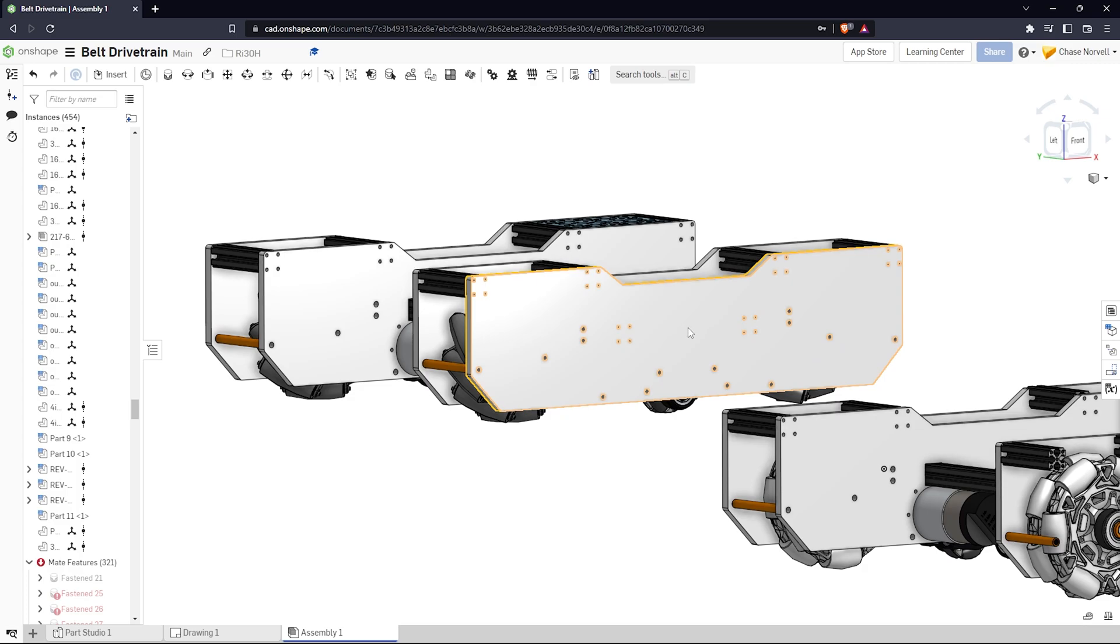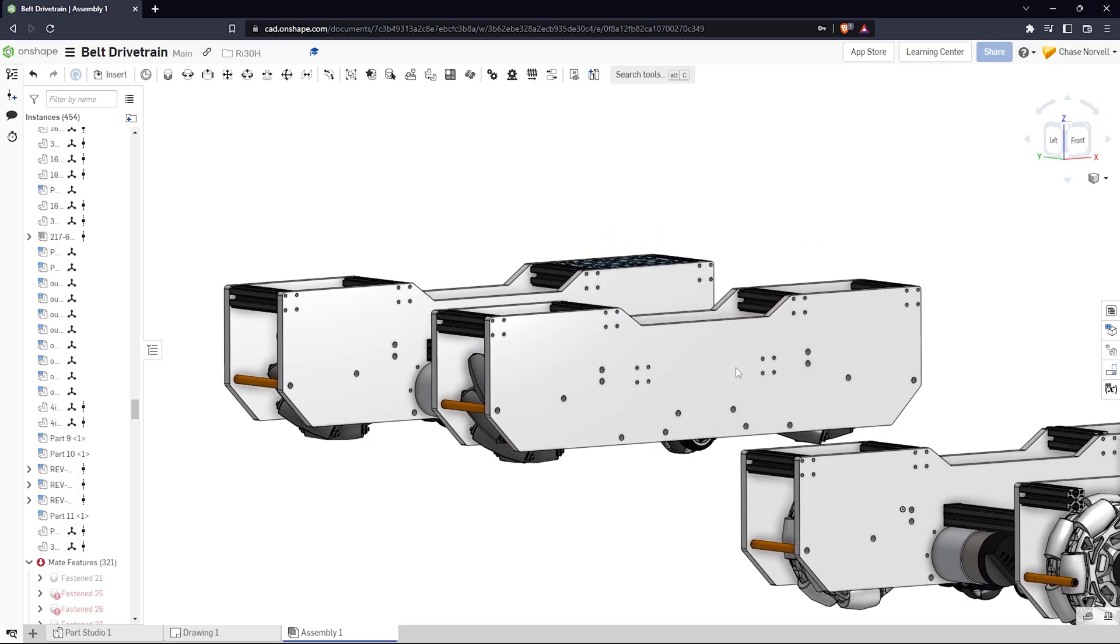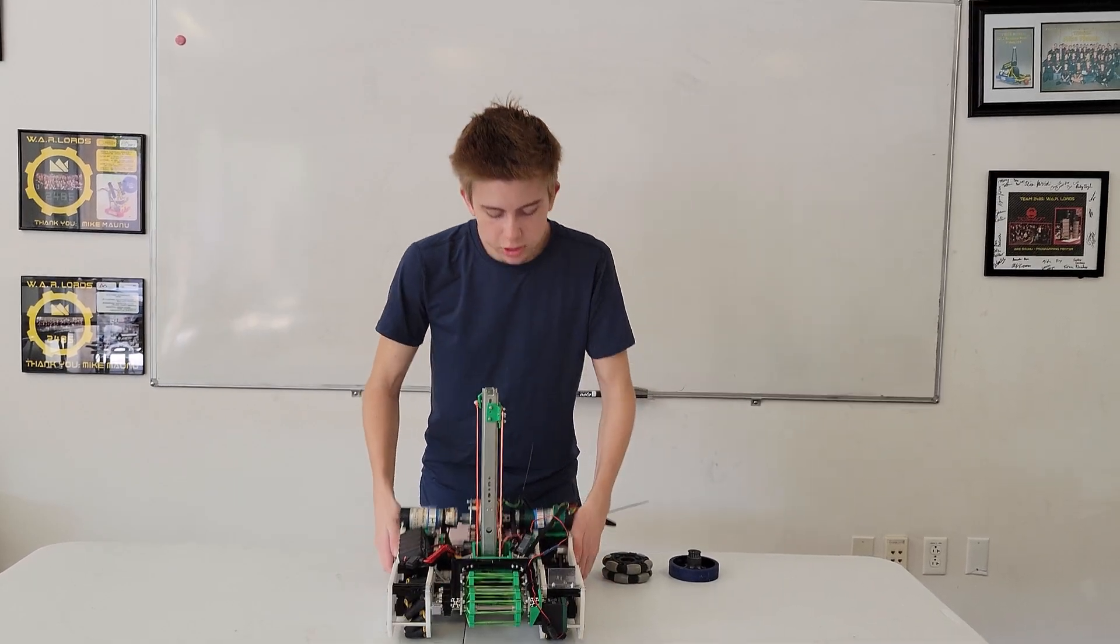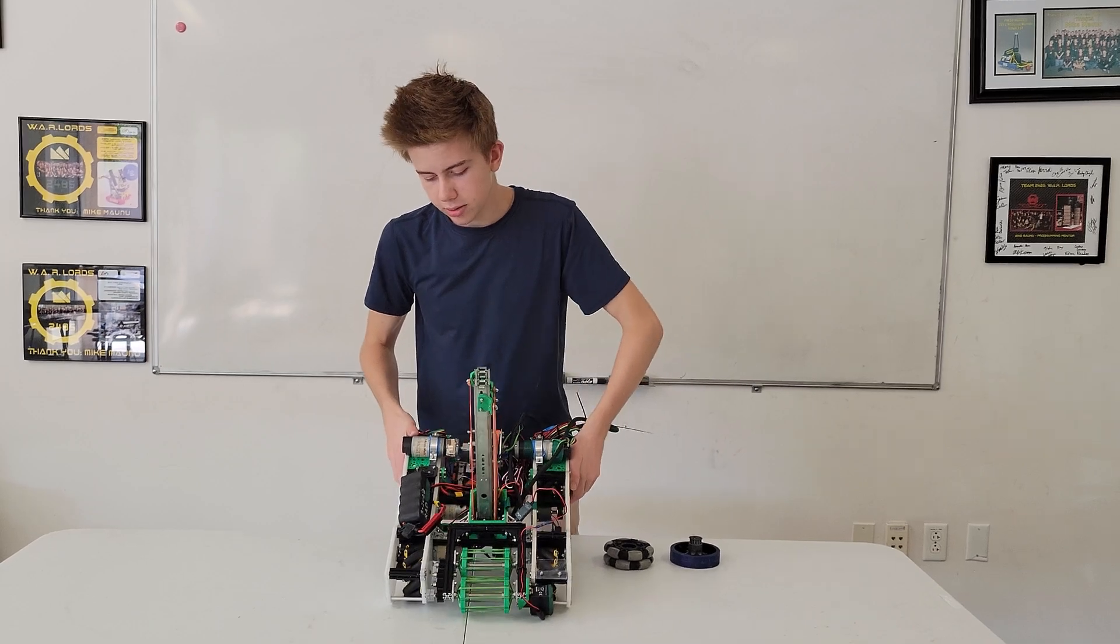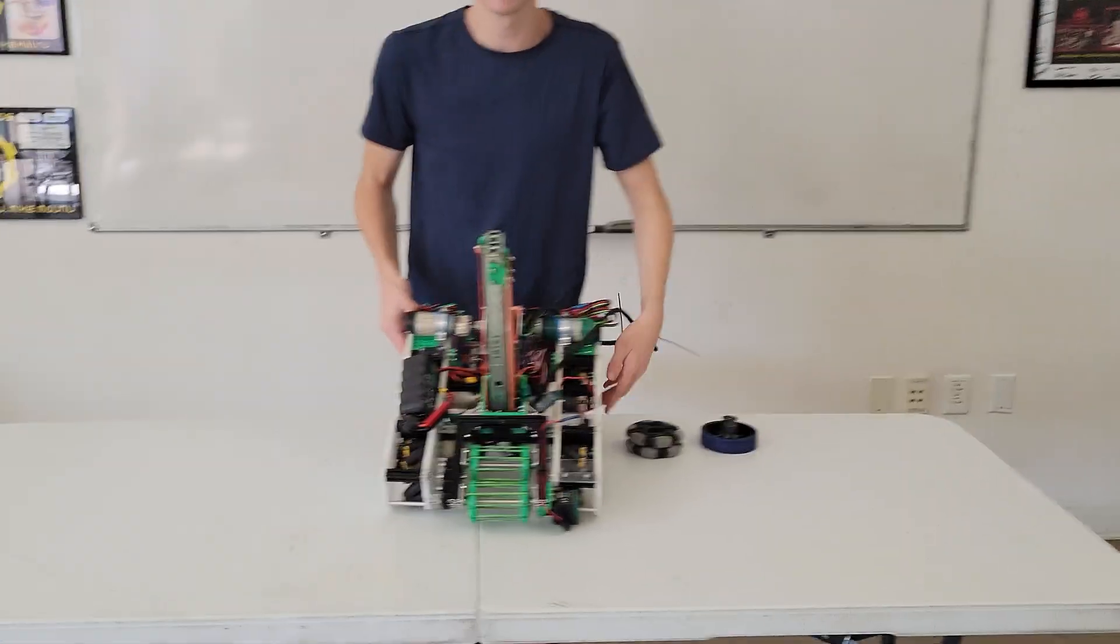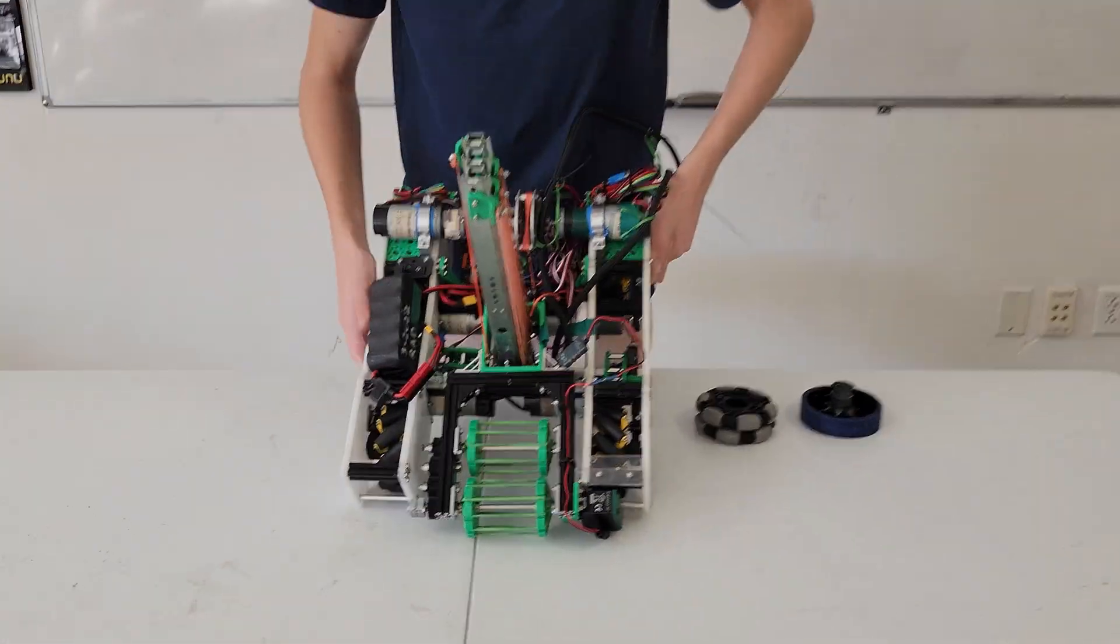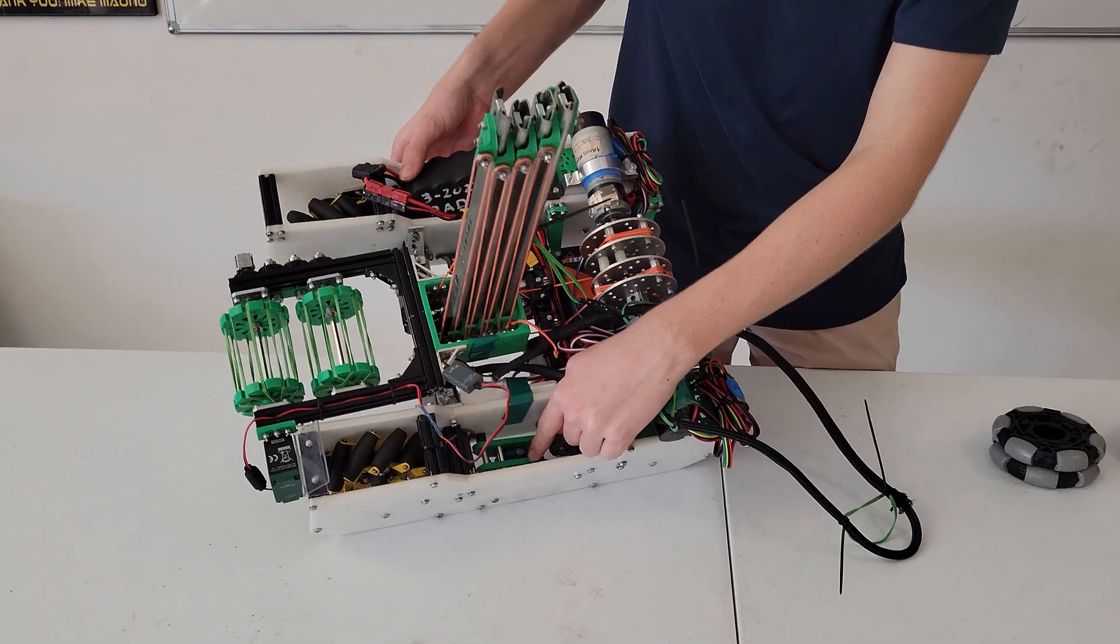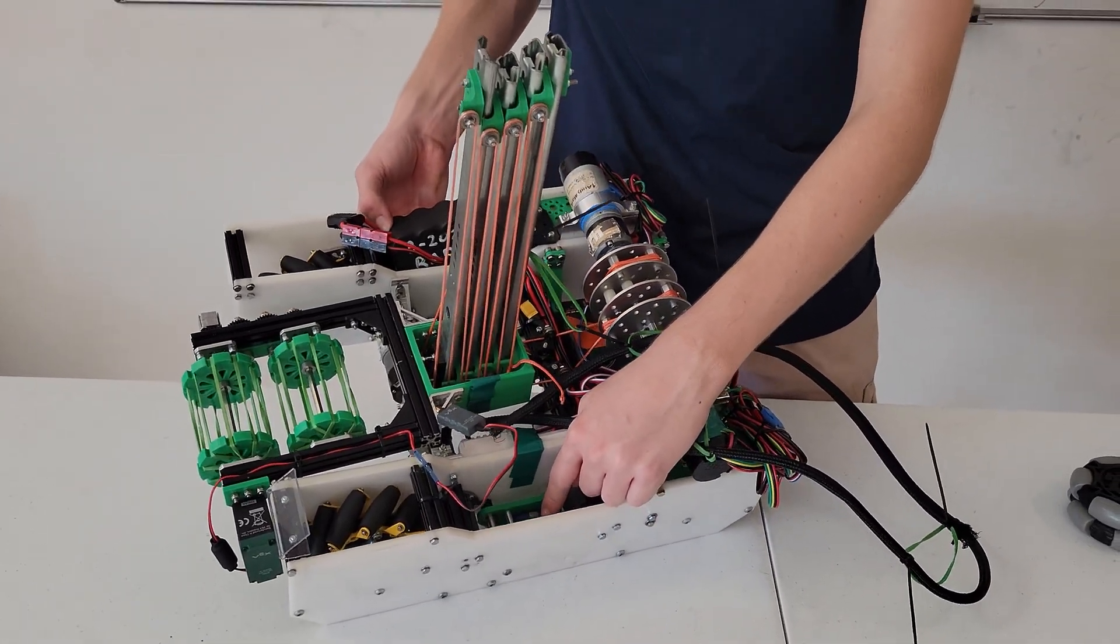We also have three odometry pods right here, located in the middle and the two rights of the drivetrain. You can see them there. There's one. This helps with precise localization, so that's super cool.